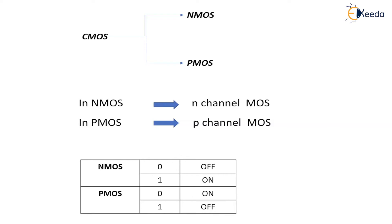For an NMOS, the body terminal will be connected to ground, whereas for a PMOS it will be connected to the DC supply, VDD. Now, an important question: is your MOSFET a voltage-controlled device or a current-controlled device? This comes up in university examinations and competitive exams like GATE. It is a voltage-controlled device — the voltage at the gate terminal determines how much current will pass between your source and drain region.